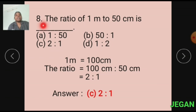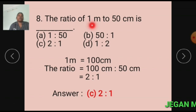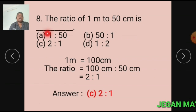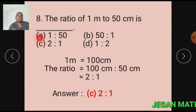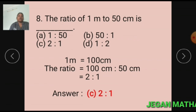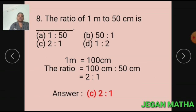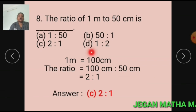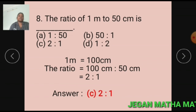Question number 8: The ratio of 1 meter to 50 cm is dash. Option A: 1 is to 50. Option B: 50 is to 1. Option C: 2 is to 1. Option D: 1 is to 2.